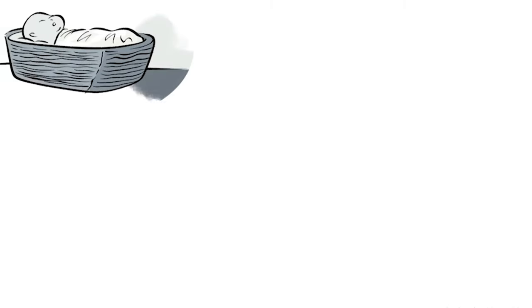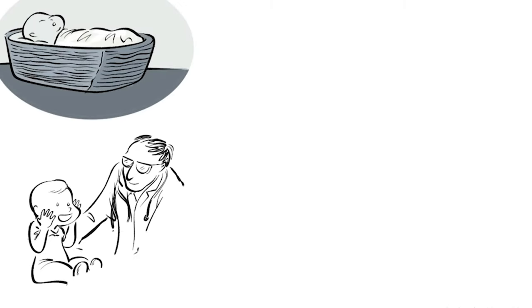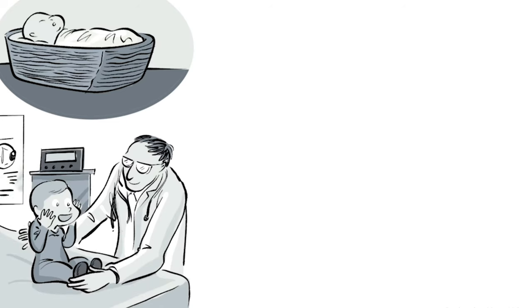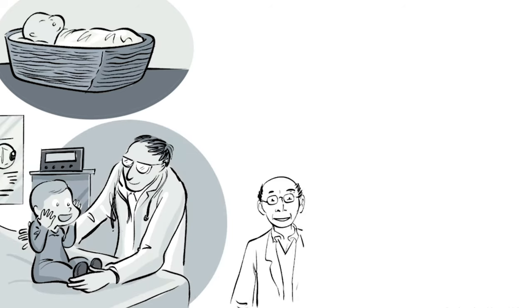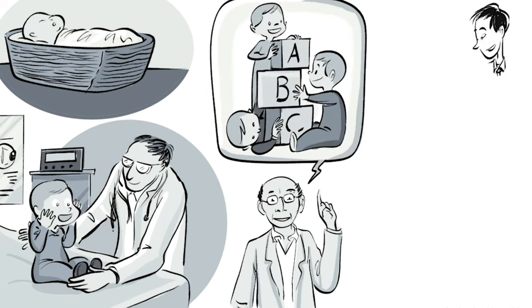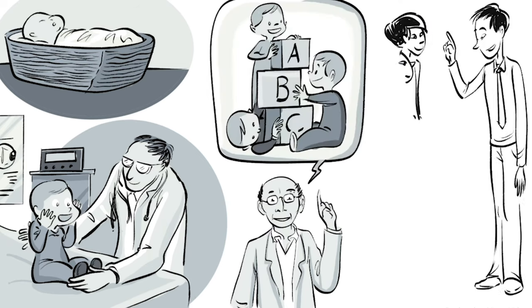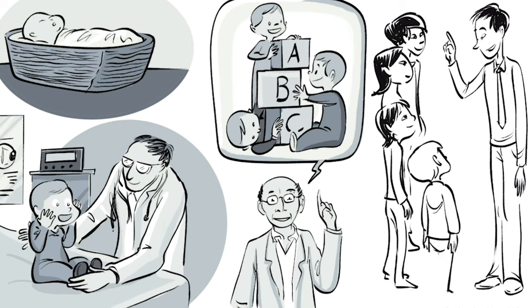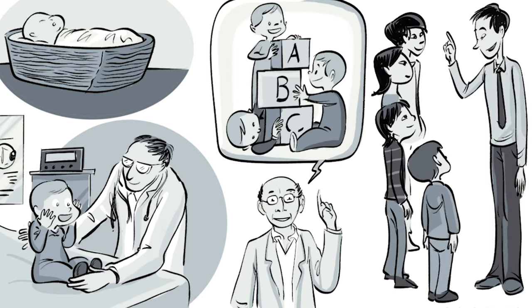Jerome Bruner was born blind in New York City in 1915. At age 2, modern medicine restored his vision. Later, he returned the favor by becoming a pioneer in cognitive development. He believed that any subject can be taught in an intellectually honest form to any child at any stage of development.